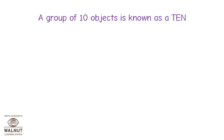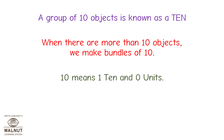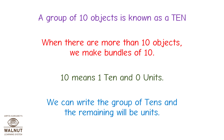A group of 10 objects is known as a ten. When there are more than 10 objects, we make bundles of 10. 10 means 1 ten and 0 units. We can write the group of tens and the remaining will be units.